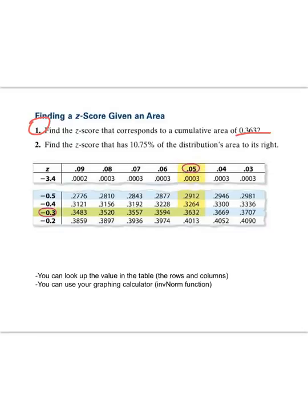For number one, find the z-score that corresponds to the cumulative area of 0.3632. Using the table, we've looked up percentages, but now we're going to use the percentages to look up the z-score. So 0.3632, if you look, you can see it's right here in the crossroads of what they've highlighted. If you go to the left, you can see that it's going to be negative 0.3, and if you go up, five hundredths.